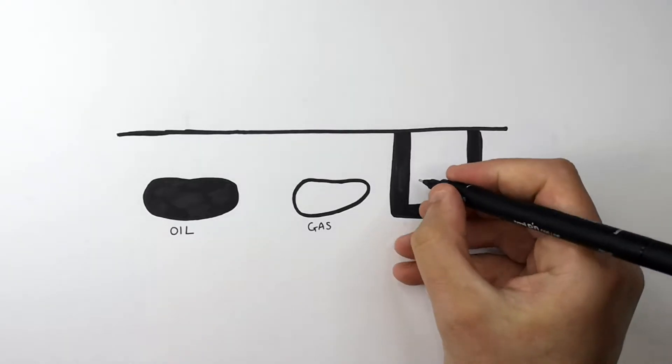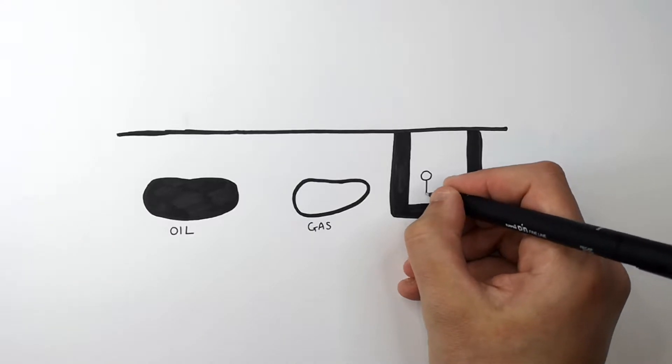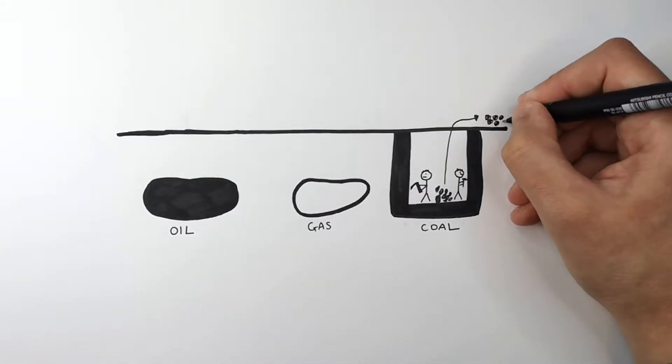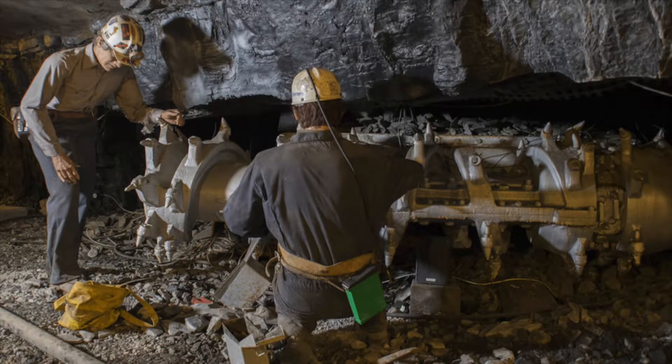We're firstly going to look at the extraction of coal. Coal is mined, so people have to extract it from the ground via mining. In this picture here you can see real miners at work mining coal.